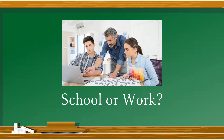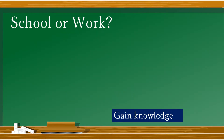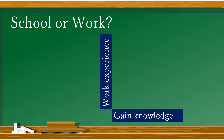Let's make an example. Say you want to decide whether to go to business school or start work. On the one hand, you want to gain business knowledge, but you also want to gain work experience. These are our two decision criteria. The first option you might pick is going to university, where you'll get a lot of knowledge about business, but unfortunately have very little time to work.